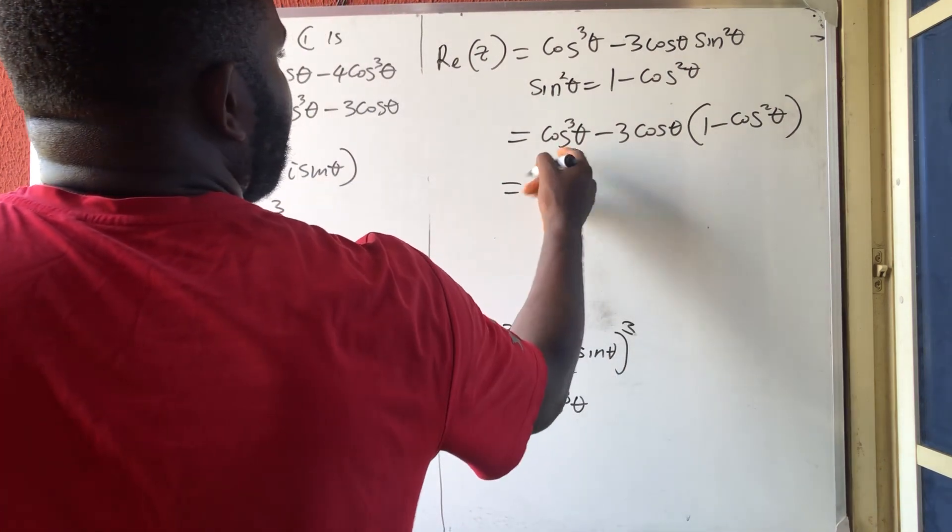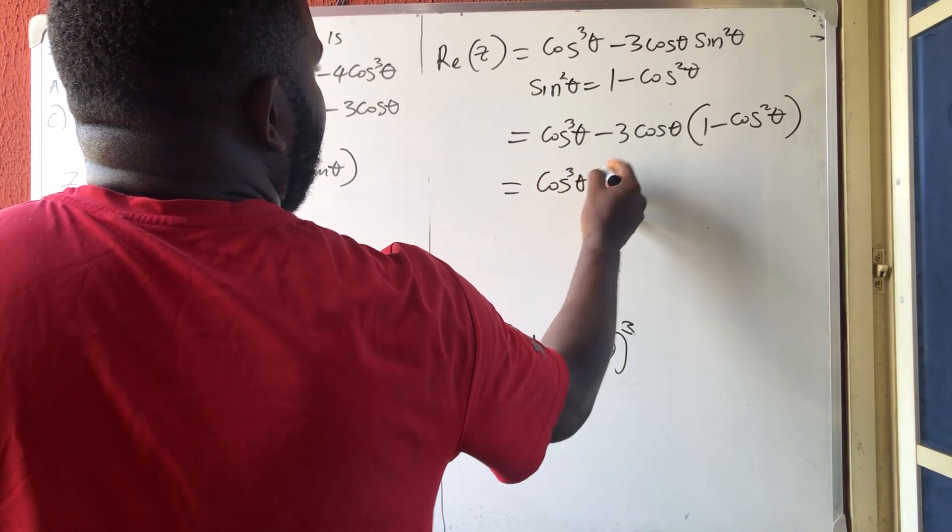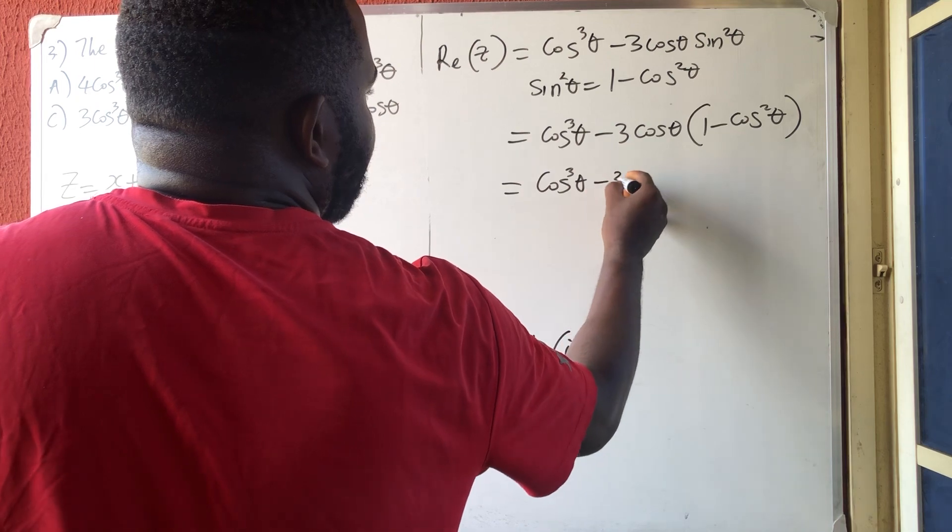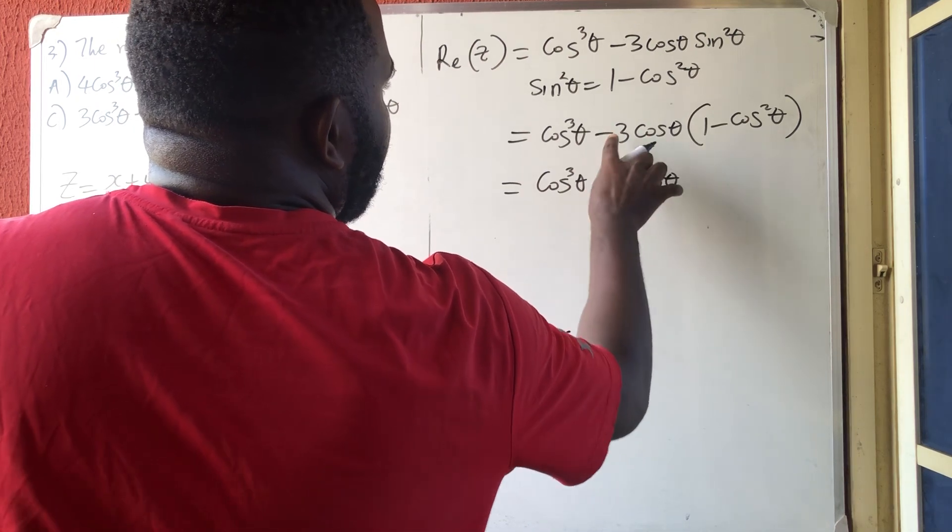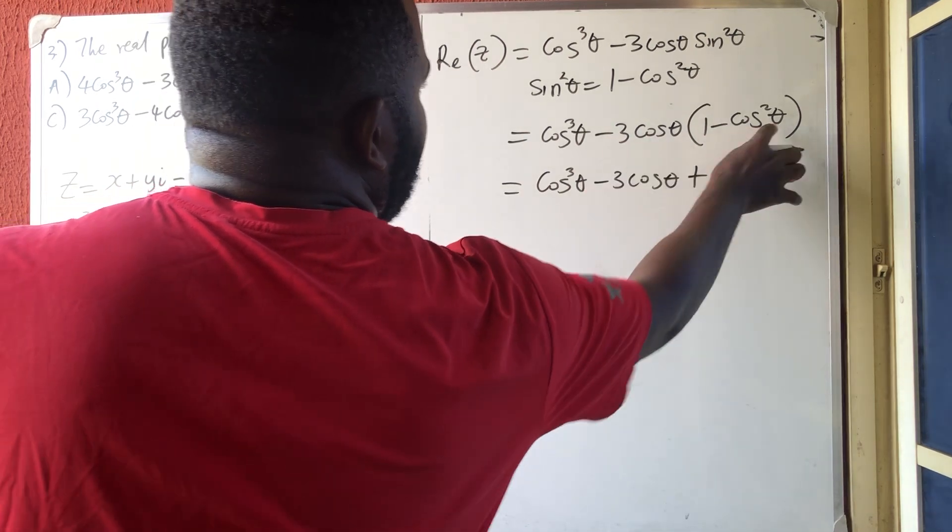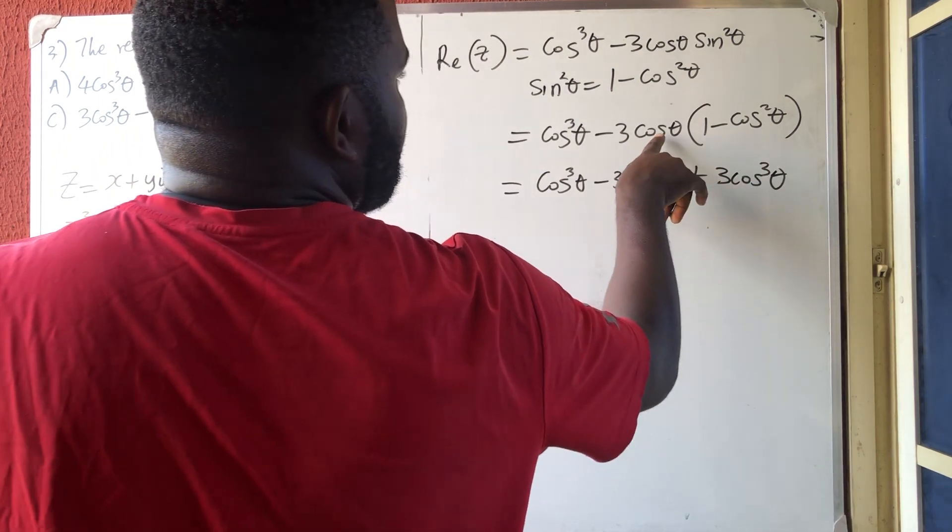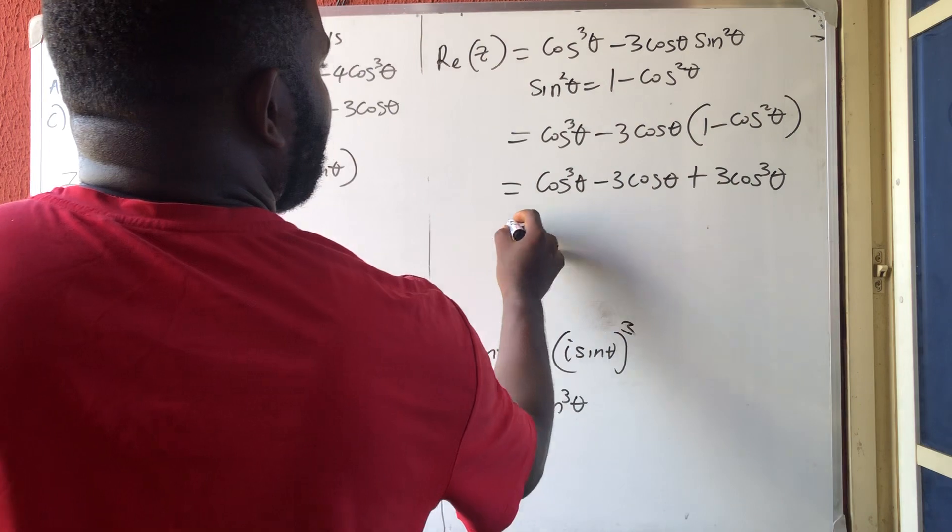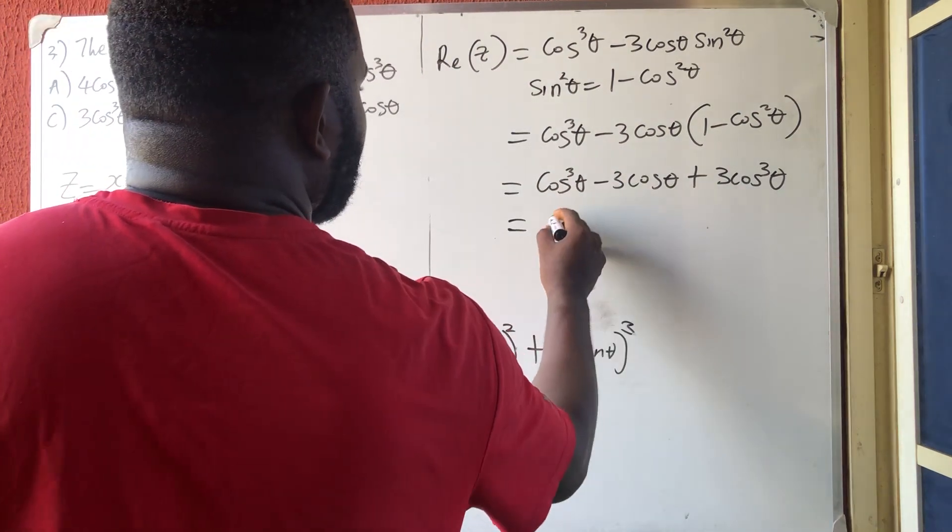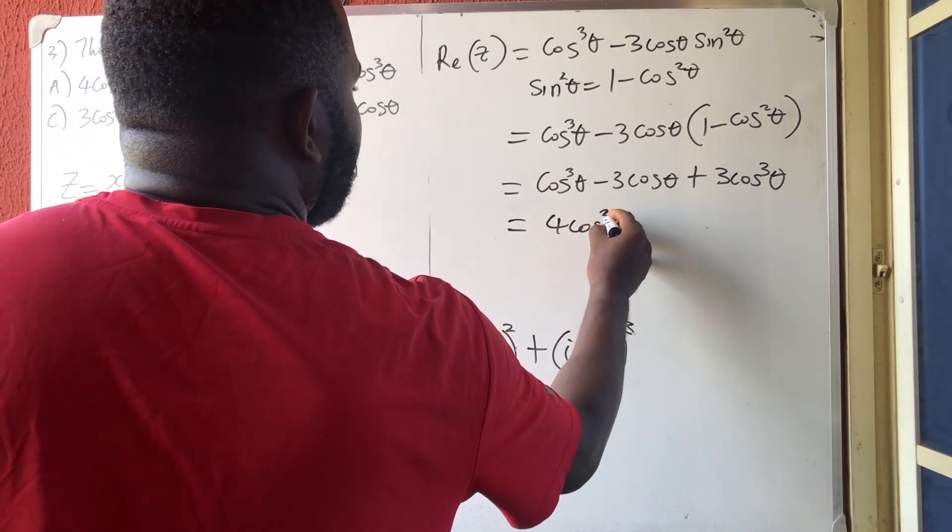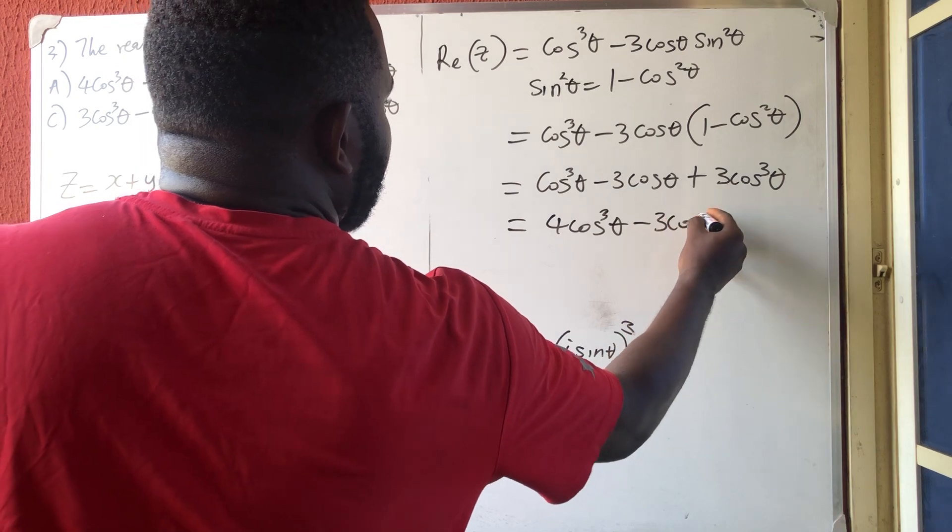So, this will give me cos 3 theta minus, so minus 3 cos theta. Minus times minus plus 3 times this will give 3 cos 3 theta. Because, this is 1 plus 2 which is 3. So, you're going to have 4 cos 3 theta minus 3 cos theta.